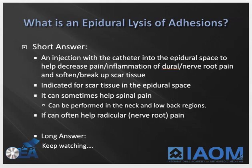So, what is epidural lysis of adhesions? The short answer is it's an injection with a catheter into the epidural space to help decrease pain and inflammation of dural and nerve root pain, and to soften up and break up scar tissue. It's indicated when there's too much scar tissue, usually after a surgery, that's built up into the epidural space and scars down your nerve roots. It can sometimes help with some low back or neck pain, but it's really indicated for when nerve roots are causing arm pain from the neck or leg pain from the back due to scar tissue after a surgery.